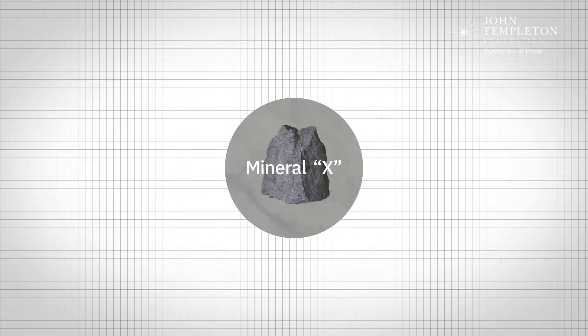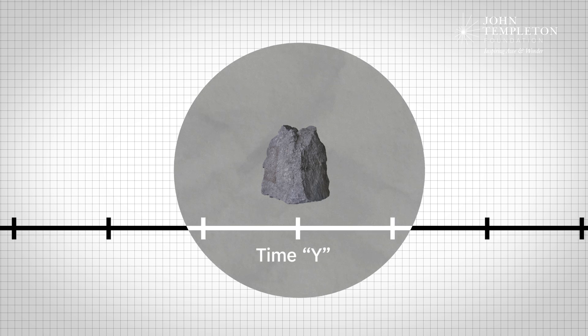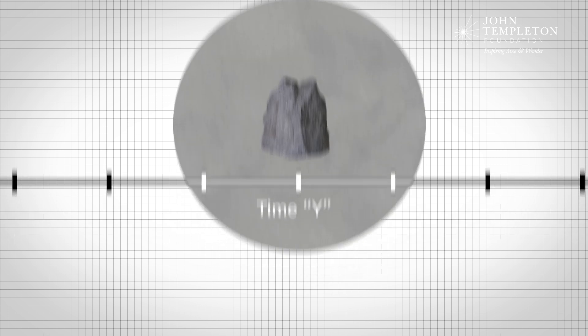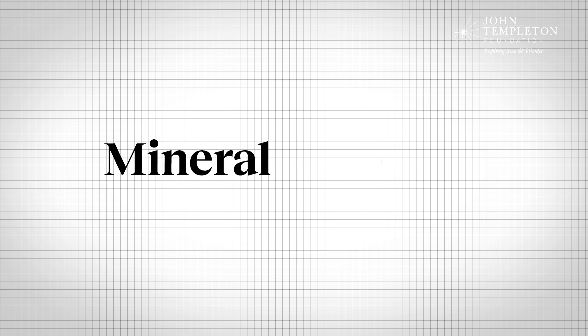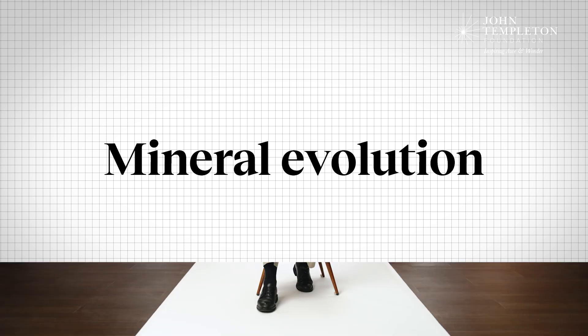A colleague asked me, was Mineral X around at time Y in Earth history? It was putting a time axis on mineralogy. And this led to the idea of mineral evolution — where you start with just a few dozen minerals that form planets in the earliest stage of our solar system, to 100 minerals, then 300, then 800, then 3000. And then life comes along and makes another 3000 minerals. That's evolution.